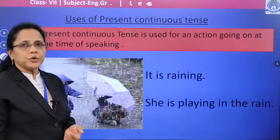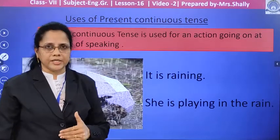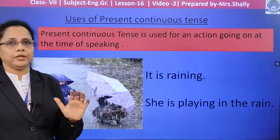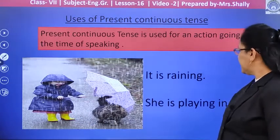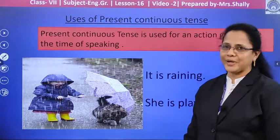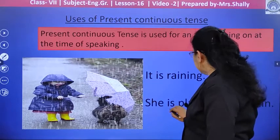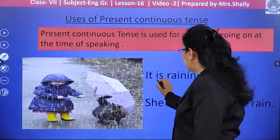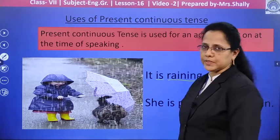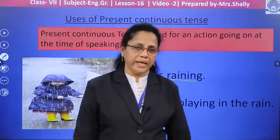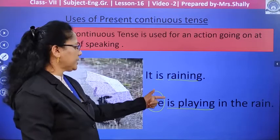Now let's see the uses of present continuous tense. As I mentioned, it is used for an action going on at the time of speaking. Look at this picture — what is this girl doing? She is playing in the rain, and it is raining. You can see 'is' plus the ing form of the verb. Because the subject is singular — 'she' — she is playing in the rain.